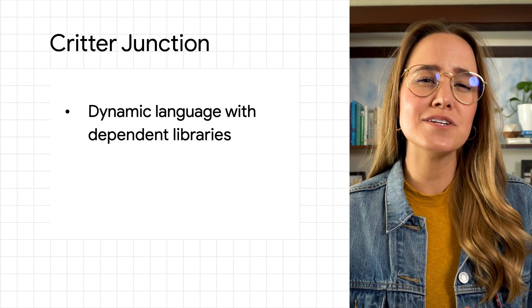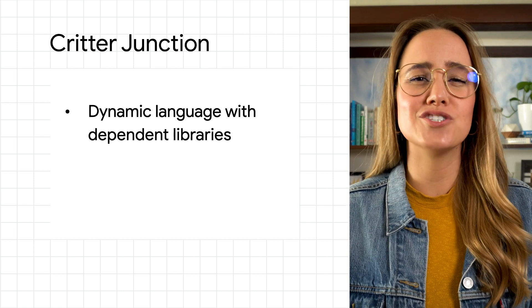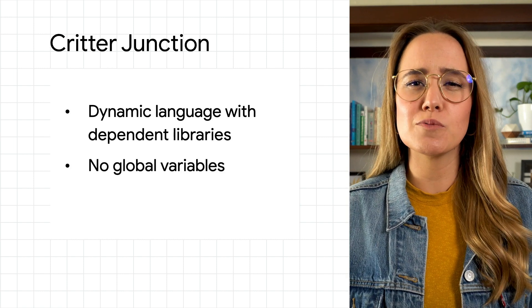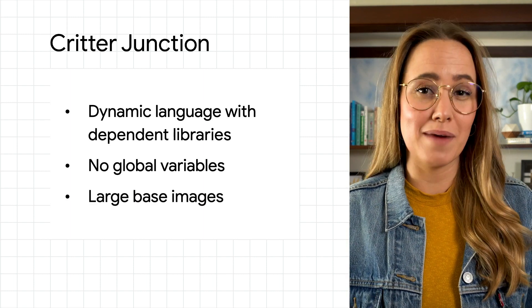First, they happened to be using a dynamic language with dependent libraries, like importing modules in Node.js. They weren't using global variables, and their container images were about 700 megabytes in size. This meant they were facing longer load times upon container startup, or required additional computation before the server could start listening for requests. Instead, they want to optimize their service startup speed to minimize that latency. Let's dive into each.